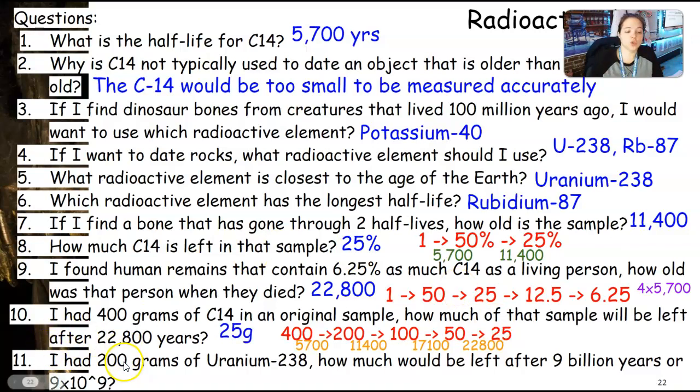If I had 200 grams of uranium-238, how much would be left after 9 billion years or 9 times 10 to the 9? We already know that uranium-238 is 4.5. So, I'm going to go 4.5 and up to 9. I multiply 4.5 times 2, I get 9. There is one half-life. So, I start at 200 grams. I go down to 100 grams. I go down again. I'm left with 50 grams.